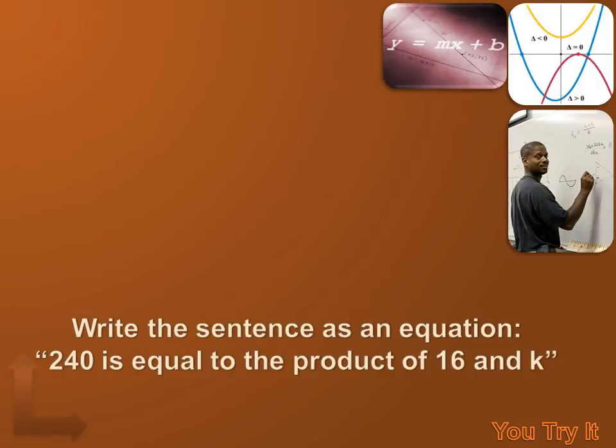You know, one of the requirements of a lot of math, and algebra in particular, is to be able to translate an English sentence into a mathematical expression. So, let's work on that. And one of the things I do is to circle the numbers. I've got this question. Write the sentence as an equation. 240 is equal to the product of 16 and K. Well, let's circle the numbers. I know my answer is going to include 240, 16, and K. Now, how do I combine those? Well, there's going to be some clues in the sentence. It says 240 is equal to the product of 16 and K.